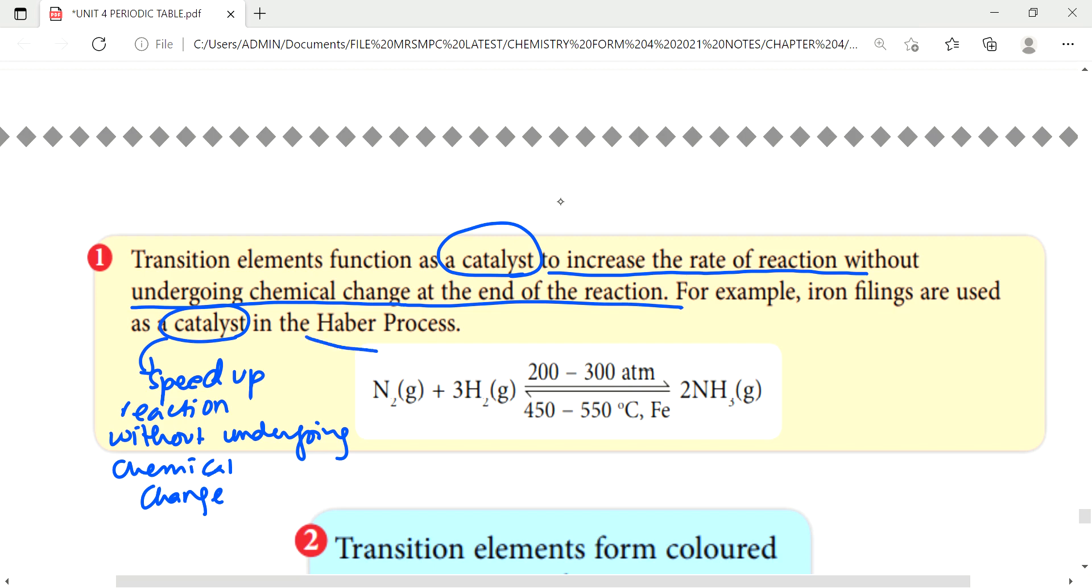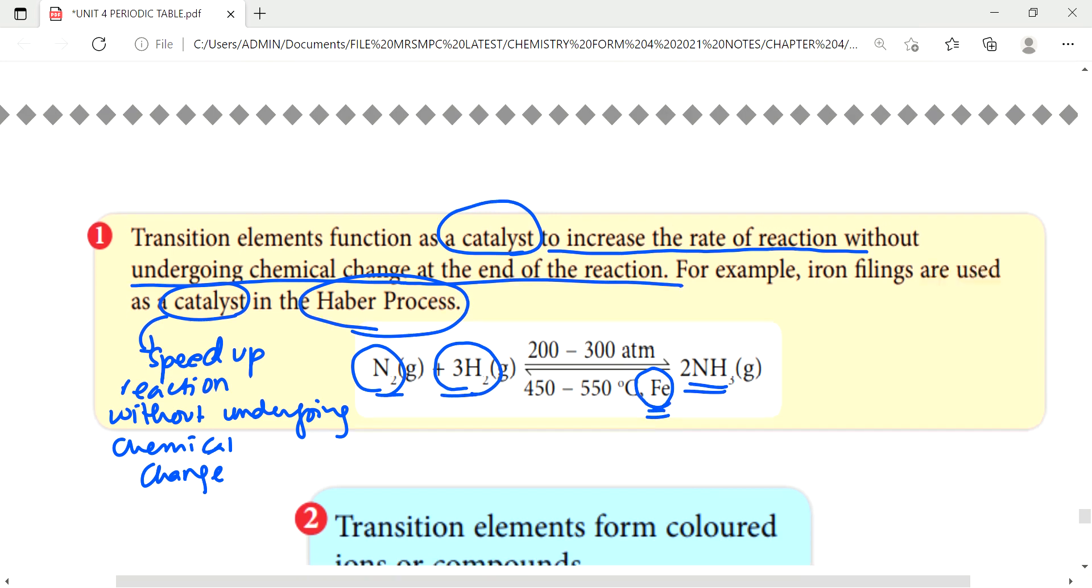For example Haber process. Haber process is the process to produce ammonia gas. So we use nitrogen gas with hydrogen gas, we react them. Since we want to speed up the process, we need catalyst. The catalyst is iron. So iron is responsible to speed up the rate of reactions. But then at the same time, it is not involved in chemical change. That's why here there is no iron. There is only NH3. The product comes from the reactant. So its job is only to speed up the rate of reactions.